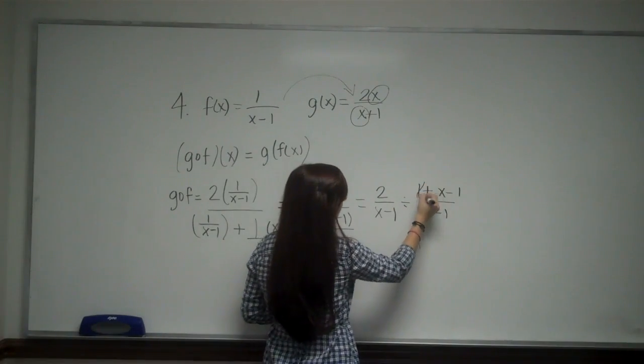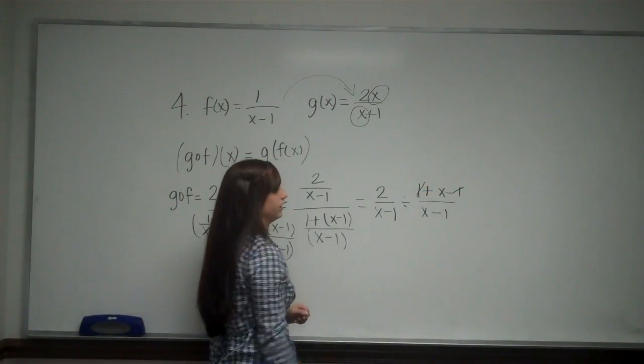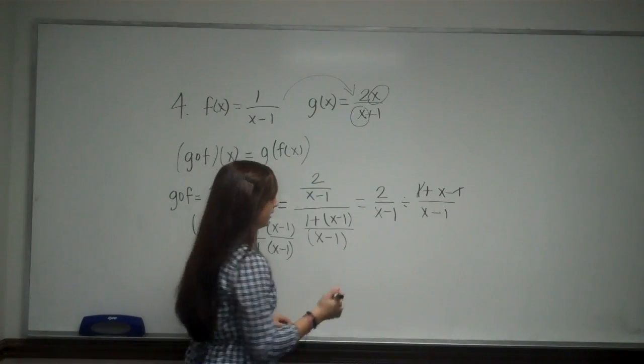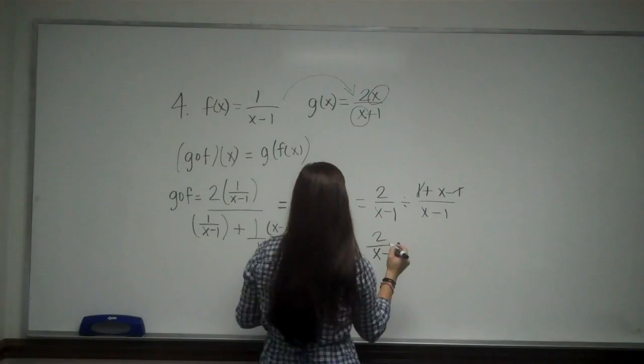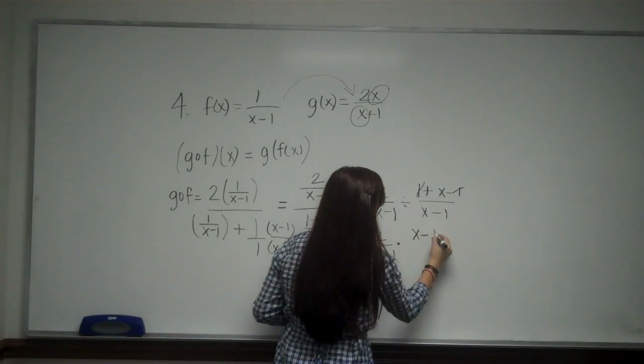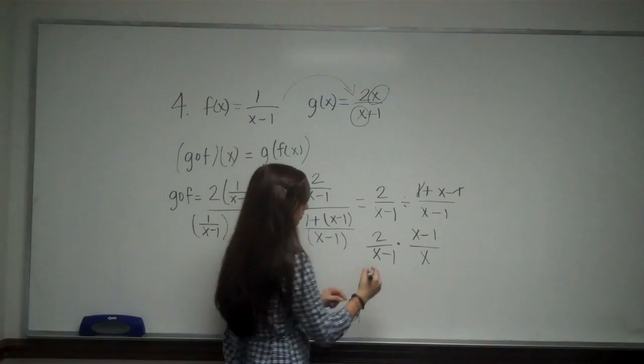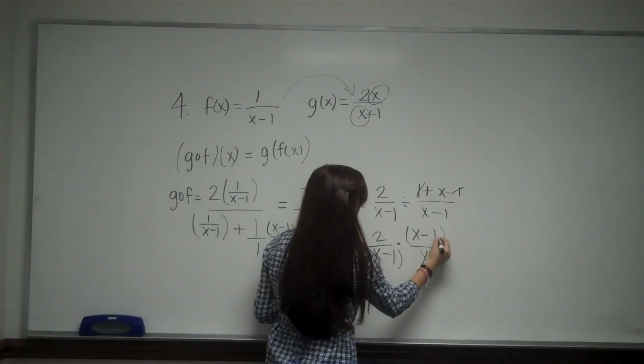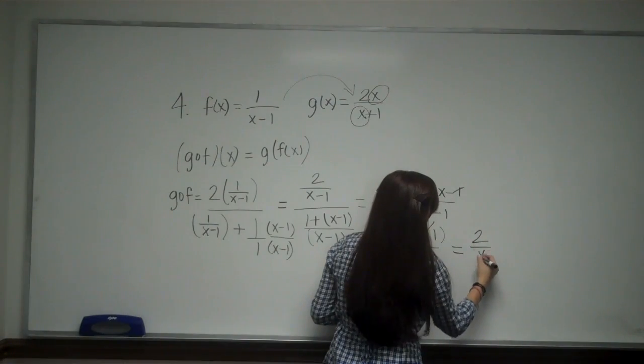So from here you can see my 1's will cancel. And I'm going to flip the second fraction and multiply. So I have 2 over x minus 1 times x minus 1 over x. Now because I'm multiplying, my x minus 1's cancel, and I'm just left with 2 over x.